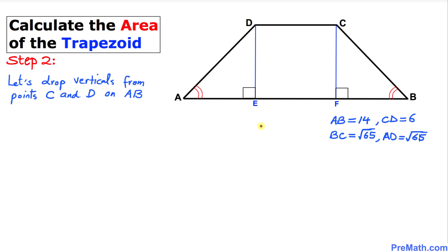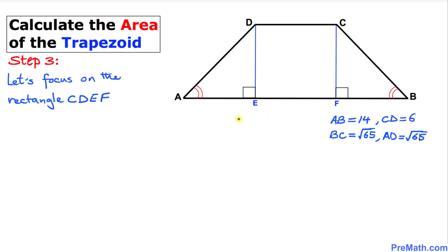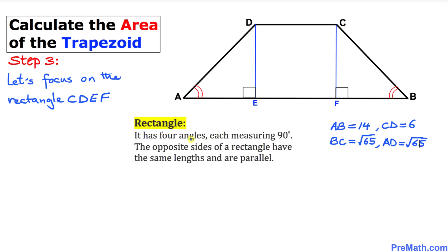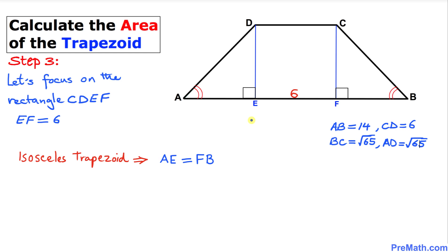Now let's focus on rectangle CDEF. A rectangle has four angles each measuring 90 degrees, and opposite sides have the same lengths and are parallel. That means side EF equals side CD. Since CD is 6 units, EF is 6 units as well.